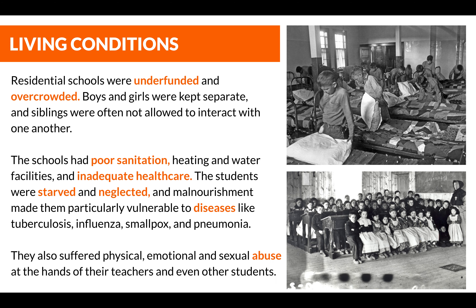Residential schools were underfunded and overcrowded. Boys and girls were kept separate, and siblings were often not allowed to interact with one another. The schools had poor sanitation, heating and water facilities, and inadequate healthcare. The students were starved and neglected, and malnourishment made them particularly vulnerable to diseases like tuberculosis, influenza, smallpox, and pneumonia. They also suffered physical, emotional, and sexual abuse at the hands of their teachers and even other students.